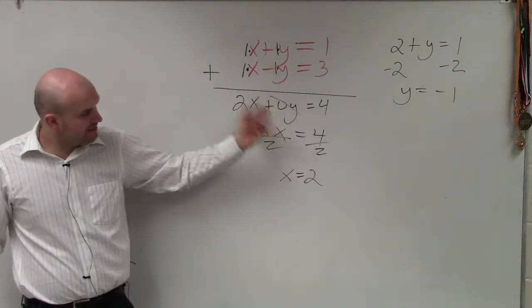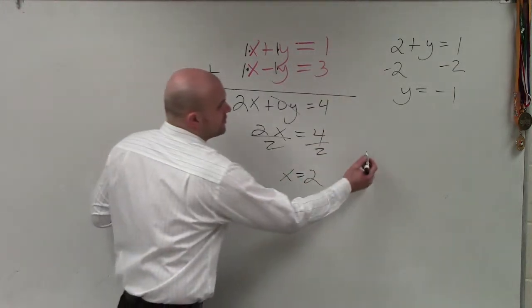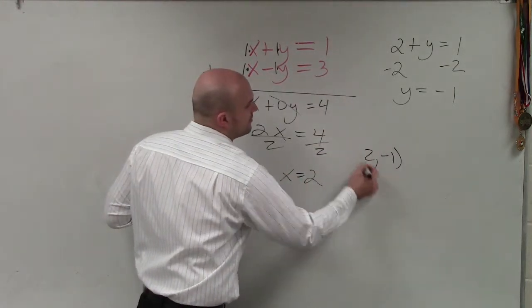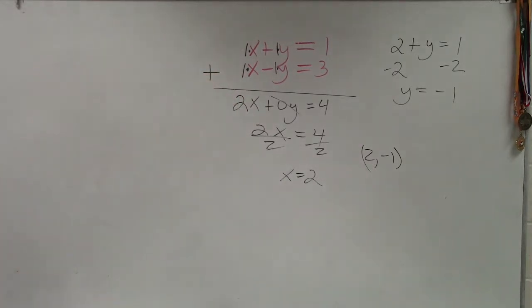Then you add, eliminate, solve, plug it into the other equation, solve. So therefore, the coordinate point where these two lines intersect is going to be 2, negative 1. Anybody have any questions about that?